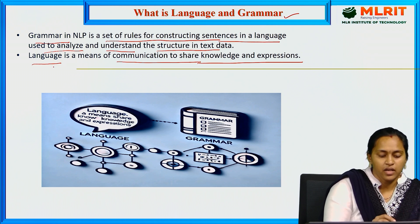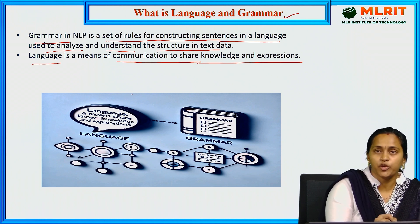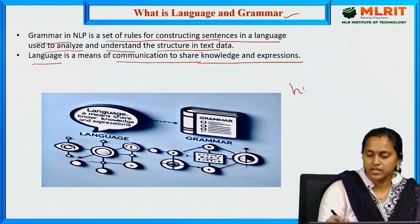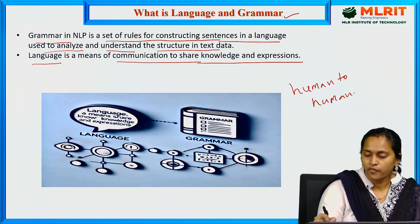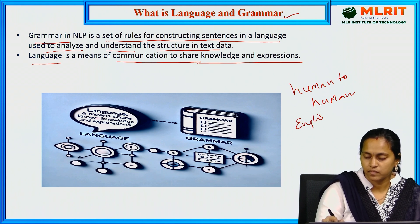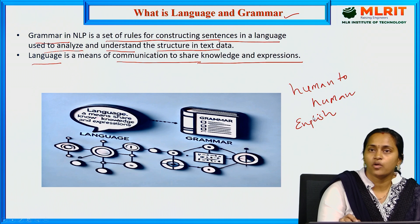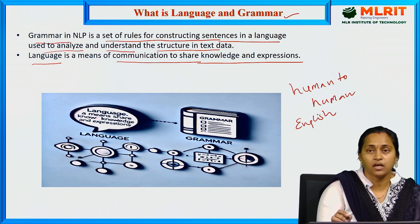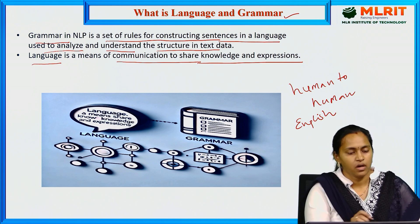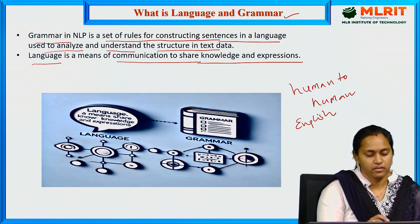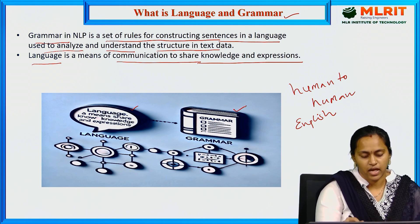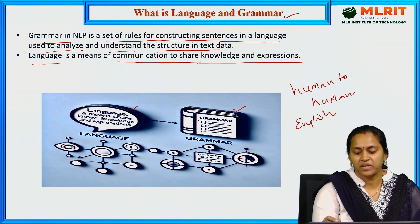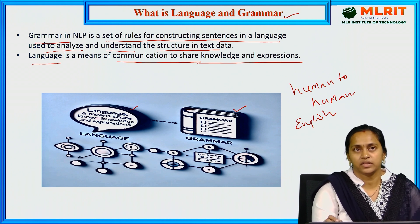Take one example: human-to-human interaction. In human-to-human interaction, we use one language, for example English. We have to follow some grammar rules. We have to follow some rules to speak in person-to-person communication.